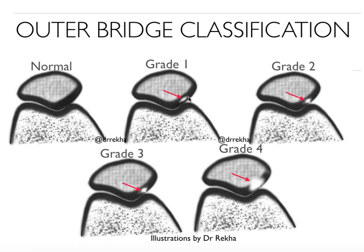Grade 1 is a focal hyperintensity or abnormality within the cartilage without extension and without fissuring into the bone. Grade 2 is a small focal hyperintensity with small fissuring involving the articular cartilage surface. Grade 3 is fissuring that is larger in size and extends to the subchondral region. Grade 4 is exposed subchondral bone.